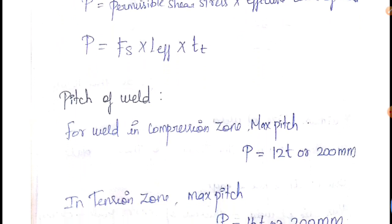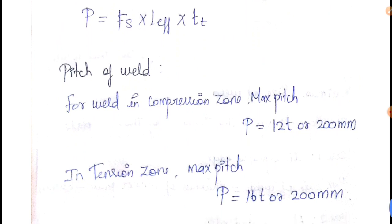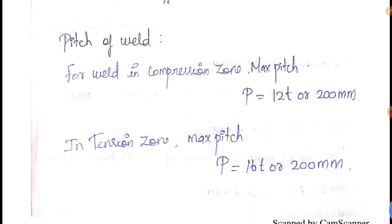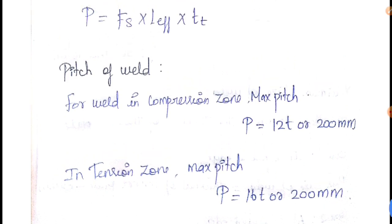Next: pitch for weld. For a weld in the compression zone, maximum pitch P = 12T or 200 mm (whichever is less). In the tension zone, maximum pitch P = 16T or 200 mm. So compression zone is 12T or 200 mm, and tension zone is 16T or 200 mm.